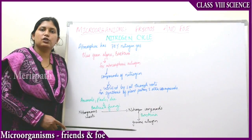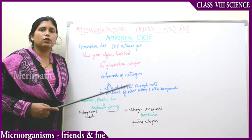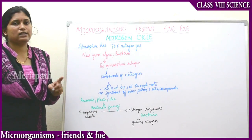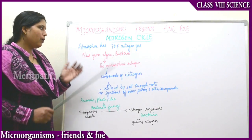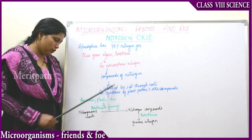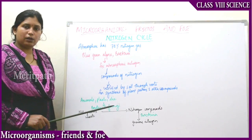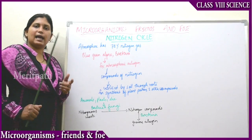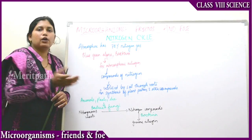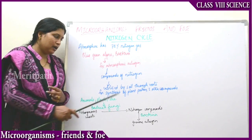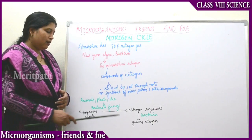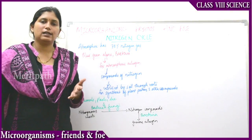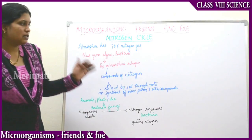So again to the atmosphere, gaseous nitrogen goes back in its original form. This is how the nitrogen cycle works. The atmospheric nitrogen is fixed into compounds of nitrogen, utilized by the soil through the roots, reaching the plants. Animals eat the plants and the nitrogen compounds enter the animal body. When the animals and plants die, the nitrogenous waste, with the help of bacteria and fungi, converts back into nitrogen compounds and then into atmospheric gaseous nitrogen.